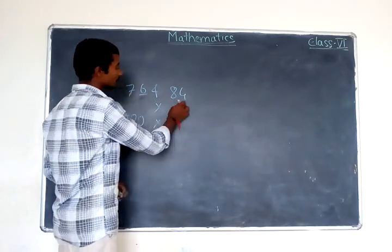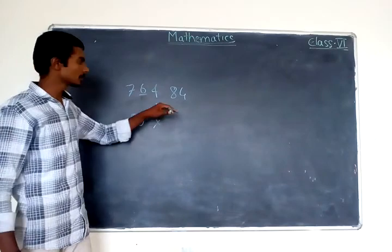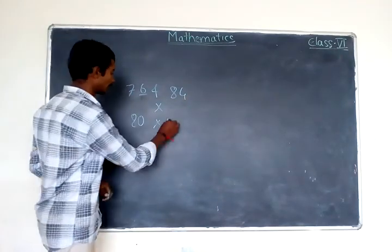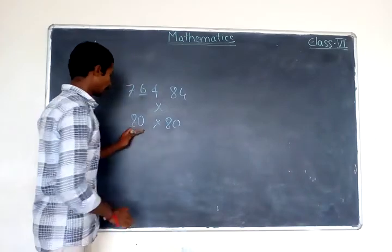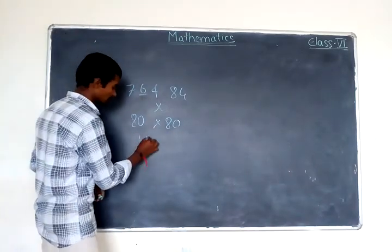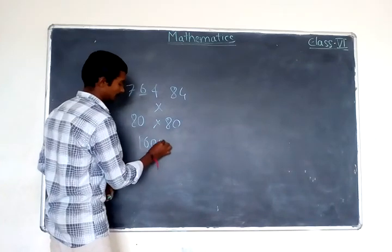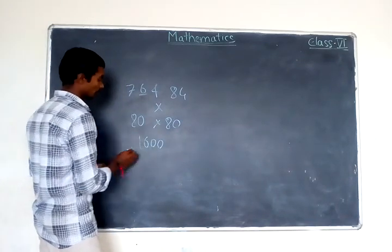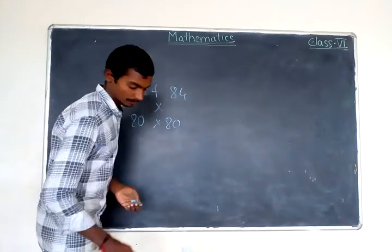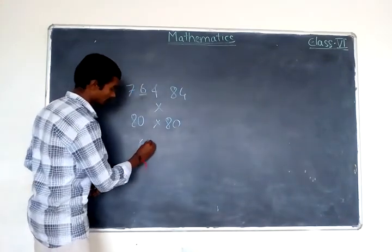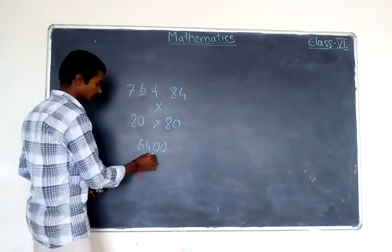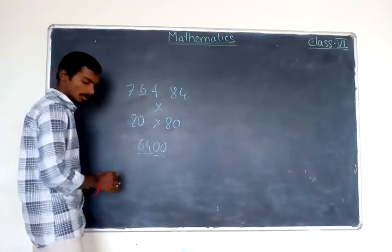And eighty-four: the units digit four is less than five, so we don't go to ninety — we will take eighty. So eighty into eighty: eighty eights are sixty-four and two zeros, which is six thousand four hundred.